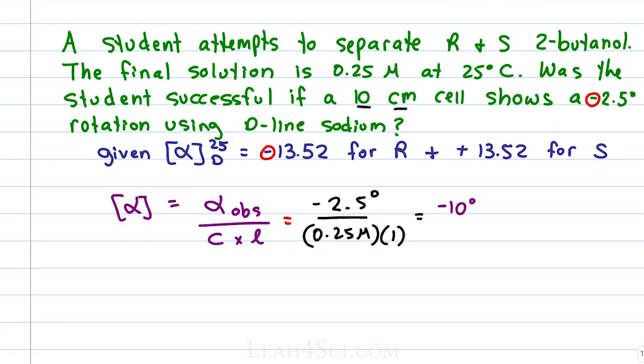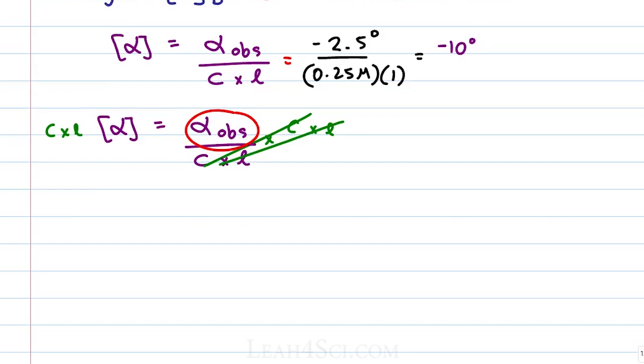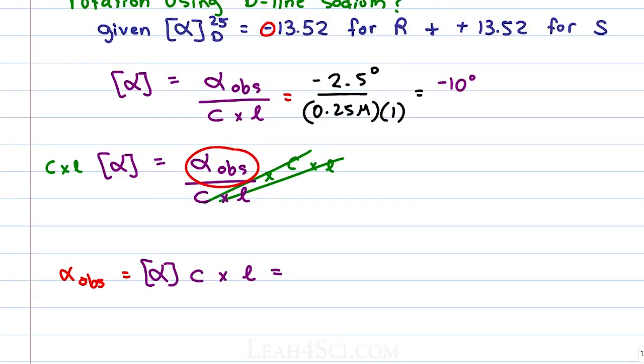To solve it the other way, let's see what a pure R solution would give us for the observed rotation under these conditions. One more time, we start with the equation, specific rotation equals observed rotation divided by concentration times length. Move concentration times length over to the other side to cancel out. That allows us to isolate observed rotation giving us the new equation, alpha observed is equal to specific rotation times C times L. And then we plug in the numbers. We are given negative 13.52 degrees for specific rotation. Multiply that by 0.25 molar for concentration and 1 decimeter for a path length. Plugging all that into the calculator, we get negative 3.38 degrees as the ideal observed rotation if this was just an R solution. The fact that the observed rotation is less than negative 3.38, it's negative 2.5 tells us there's some S remaining in there.